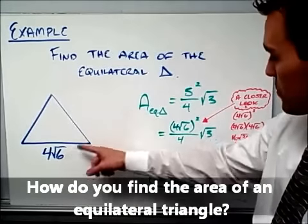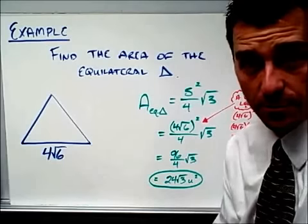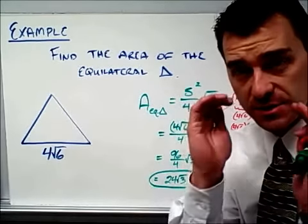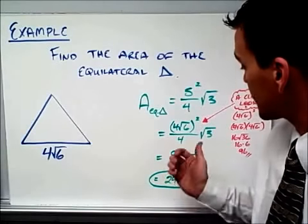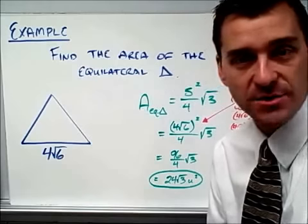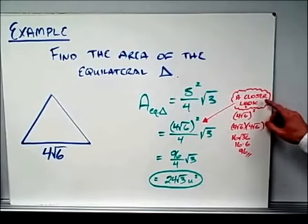I'm going to use this one. S squared, the side length is 4 root 6. So 4 root 6 I put in for S. And when I square that, you must be careful. Because when you square 4 root 6 in your calculator, make sure you put parentheses around it. Because if you don't, you're actually going to get 24 if you don't put parentheses around it. If you put parentheses around it, you'll get 96.